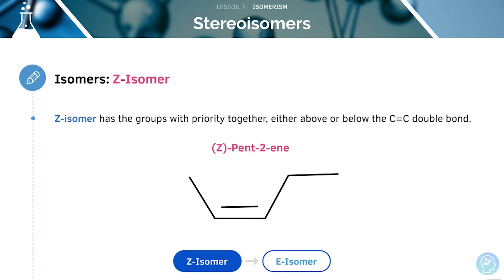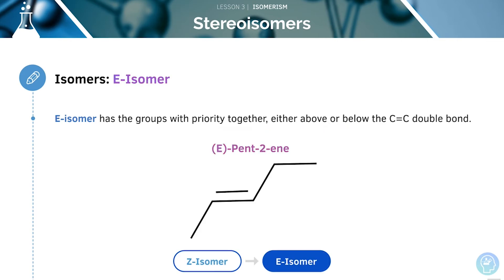Let's look at the two types of isomer separately. The Z isomer has the groups with priority together, occurring either above or below the carbon-carbon double bond. E isomers also have the groups with priority together, but this time they are on opposite sides — either above or below the carbon-carbon double bond.